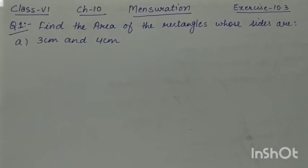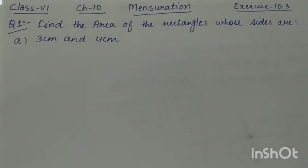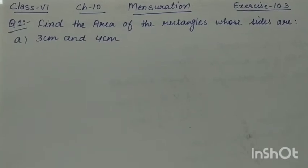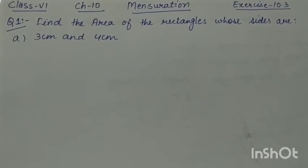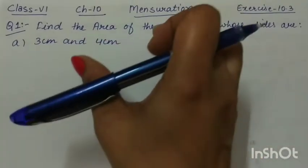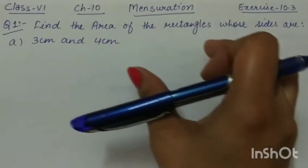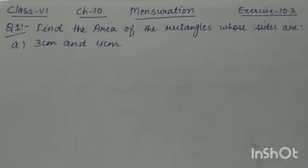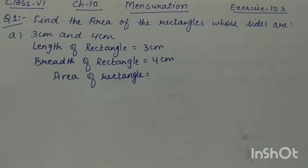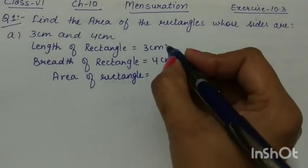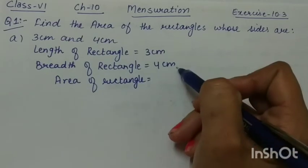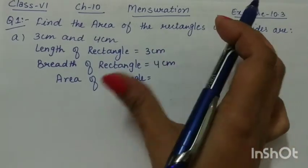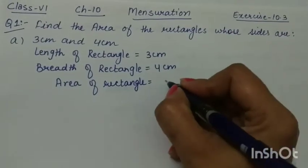Let's start question number 1 of Exercise 10.3. The question is to find the area of a rectangle whose sides are 3 centimeters and 4 centimeters. The sides are given to us and we have to find the area of the rectangle. Length of the rectangle is 3 centimeters and breadth of the rectangle is 4 centimeters.